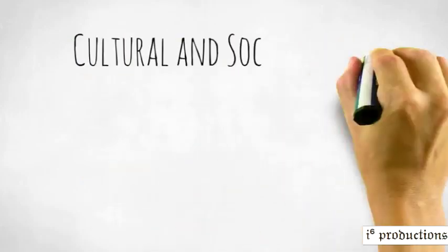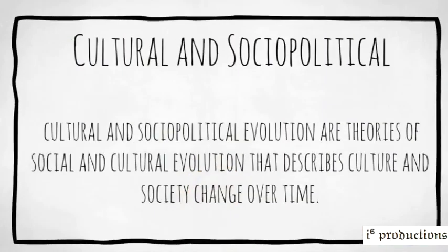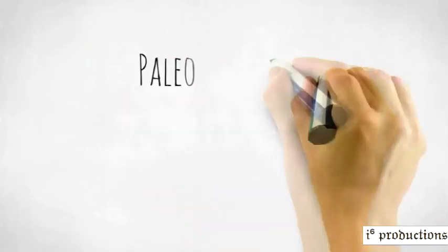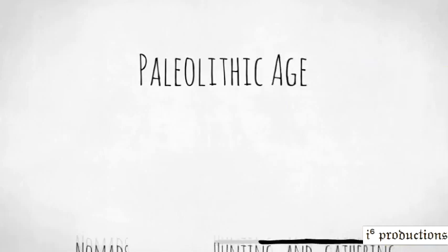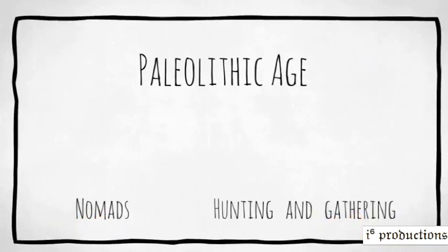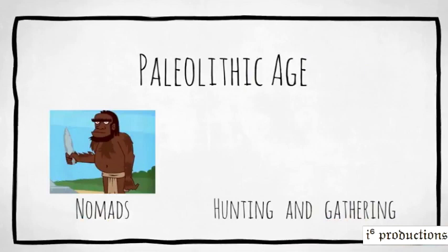Cultural and social-political evolution are series of social and cultural evolution that describe culture and society's change over time. A long time ago, during the Paleolithic age, which lasted from the beginning of human life to around 10,000 BC, people were nomads.